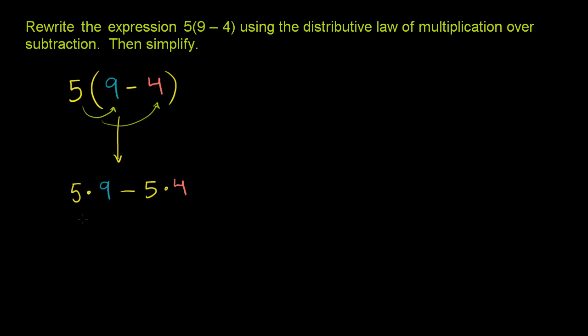But anyway, what are these things? So 5 times 9, that is 45. So you have 45 minus, what's 5 times 4? Well, that's 20. 45 minus 20, and that is equal to 25.